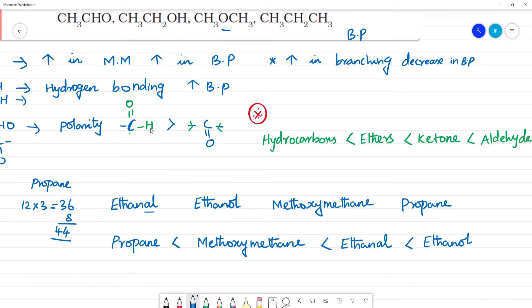Now let's calculate the methoxymethane. This is 1-2 carbon, 12 into 2 is equal to 24, 1 oxygen is equal to 16, hydrogen, 10, 16, 6, remainder 1, 46. This is for methoxymethane. Methoxymethane, propane boiling point. So let's calculate the methoxymethane.